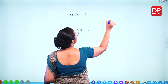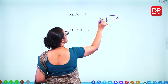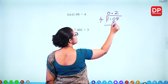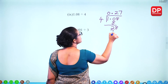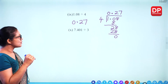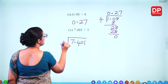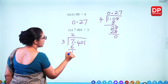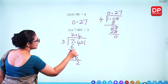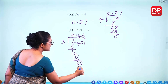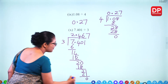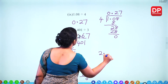For 1.08 divided by 4: for 1 nothing, put decimal point. For 10, 4 times 2 is 8 (2 remaining). For 28, 4 times 7 is 28, remainder 0. Answer is 0.27. For 7.401 divided by 3: 3 times 2 is 6 (1 remaining), put decimal point. For 14, 3 times 4 is 12 (2 remaining). For 20, 3 times 6 is 18 (2 remaining). For 21, 3 times 7 is 21, remainder 0. Answer is 2.467.